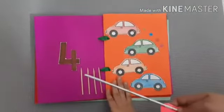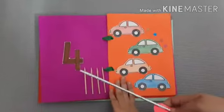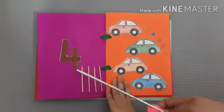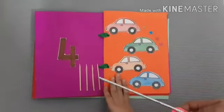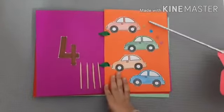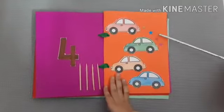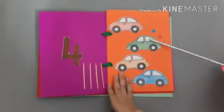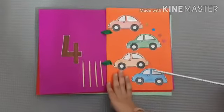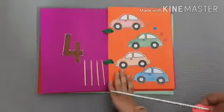Can you tell me which number is this? Yes, this is number 4. One stick, two stick, three stick, four sticks. One star, two star, three star, four star. One car, two car, three car, four car and four fingers.